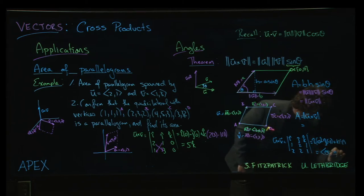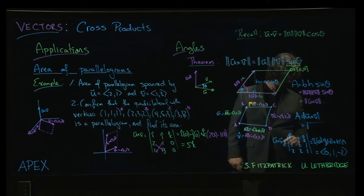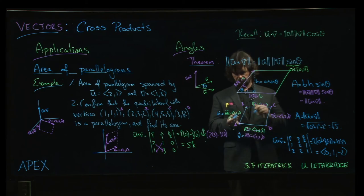And so the area of my parallelogram is going to be the square root of 0 squared, 1 squared, and 2 squared, so square root of 5 for the area of that parallelogram.